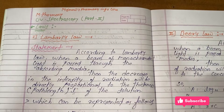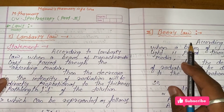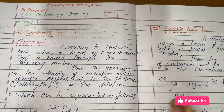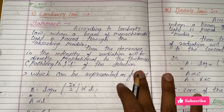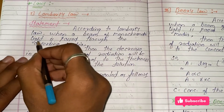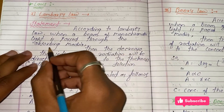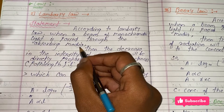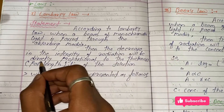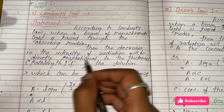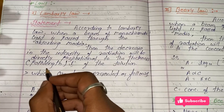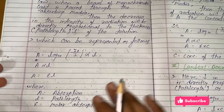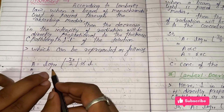The first law is Lambert's Law and the second is Beer's Law. Both laws are similar but the statements are somewhat different. According to Lambert's Law, when a beam of monochromatic light or radiation passes through an absorbing medium — the sample being analyzed in the UV — the decrease in the intensity of radiation is directly proportional to the thickness or path length, represented as L, of the solution. This can be represented as: A = log₁₀ (I₀/I).